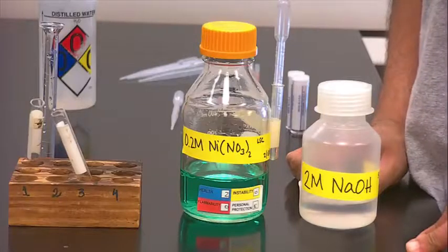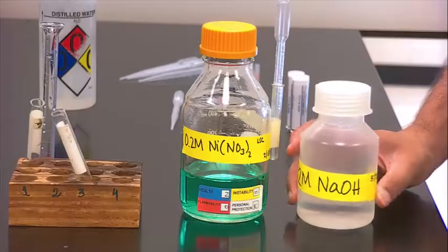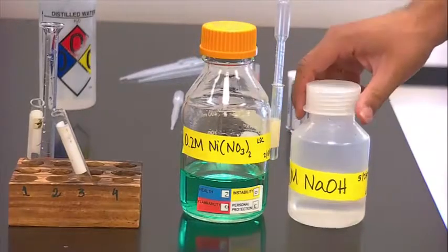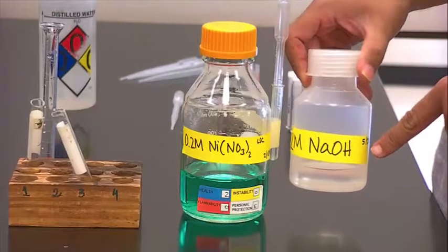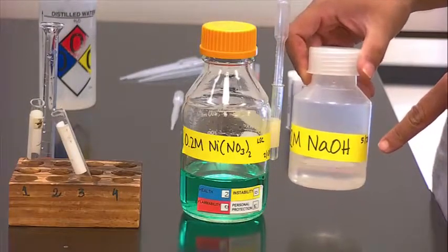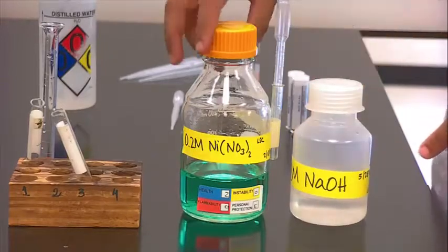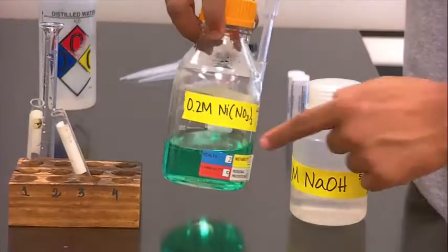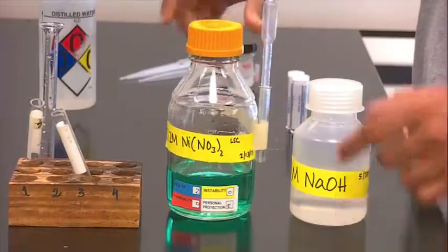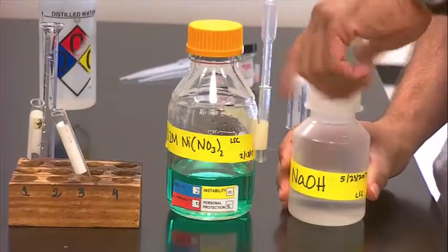For some part of this experiment, you'll be asked to use a centrifuge. Let's show you how to do that. One of the reactions you'll do is 2 molar sodium hydroxide. Remember, M stands for moles per liter. That capital M, it's a unit of concentration. 2 molar. And that will react with 0.2 molar nickel nitrate.